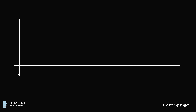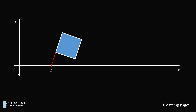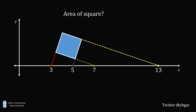Hey, this is Presh Talwalkar. Here's a fun puzzle I saw on Twitter by @YBGoy. We have the X and Y axes, and we have a square that's tilted in the first quadrant. We're going to extend the sides of the square until they intersect the X axis. Extending the left side intersects the X axis at point 3, the opposite side at point 5, the bottom side at point 7, and the top side at point 13. The question is: what is the area of the square?